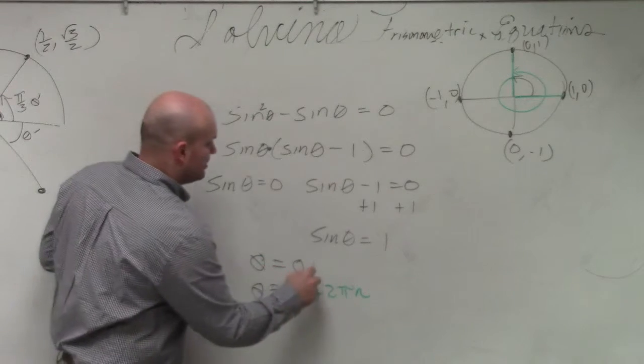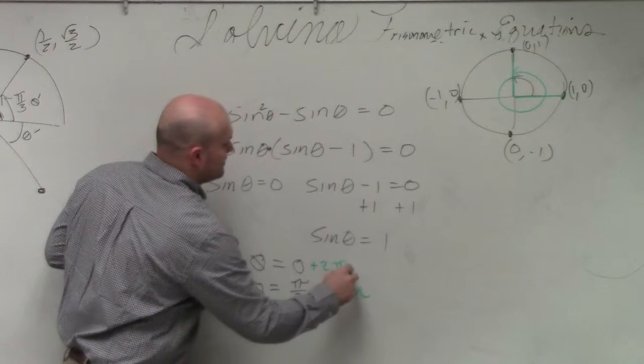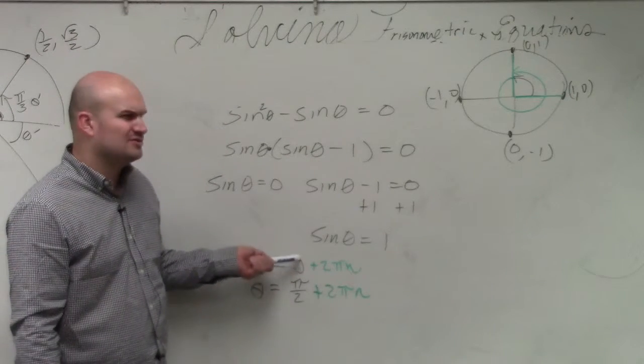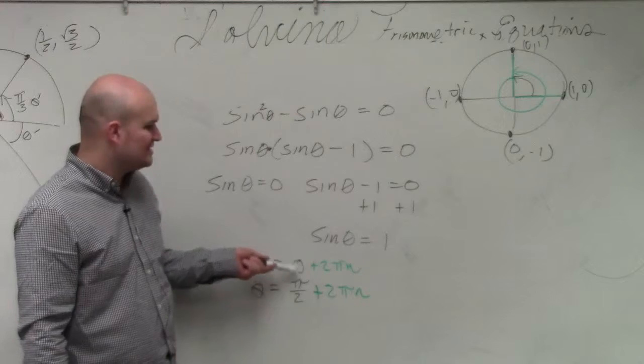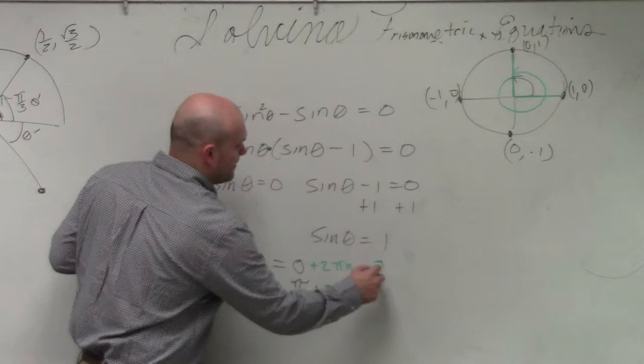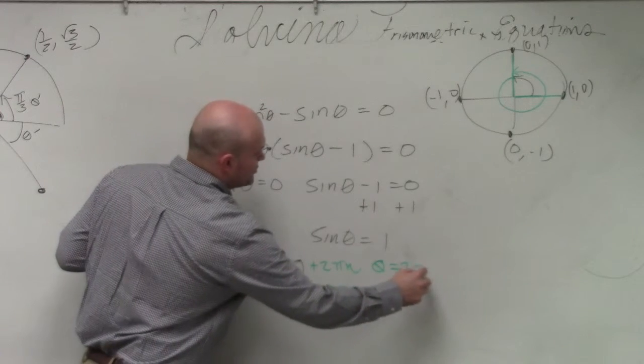Here, I can do the same thing. Plus 2πn. The reason why I did this one last is because does it really matter, does it make sense to do 0 plus 2πn? We don't really need to include 0, right? We could just say theta is equal to 2πn.